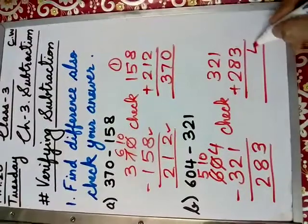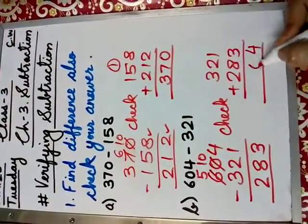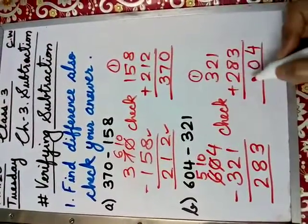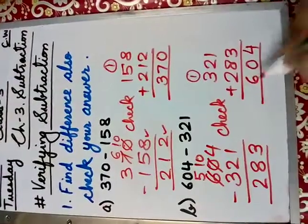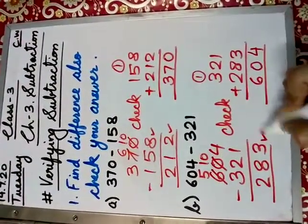Let us do 1 plus 3, 4. 2 plus 8 is or 8 plus 2, 10, 0 and 1 carry. 1 plus 3, 4. 4 plus 2 is 6. Matching, 604, 604. That means your answer is correct.